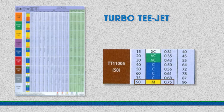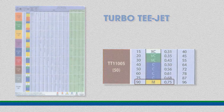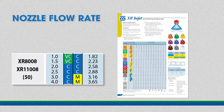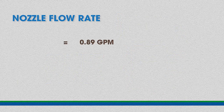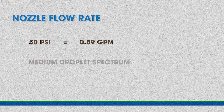If we operate the TT 11005 at 90 psi, we're putting out a flow rate of 0.75 gallons per minute. If we are concerned about increasing pressure to 90 psi due to risk of off-target movement, and we cannot find a Turbo T-Jet nozzle that gives us 0.75 gallons per minute with a medium droplet size, we must consider a different nozzle. An extended range T-Jet nozzle, XR 11008, produces an output of 0.89 gallons per minute at 50 psi and produces a medium droplet size as specified by the fungicide manufacturer.